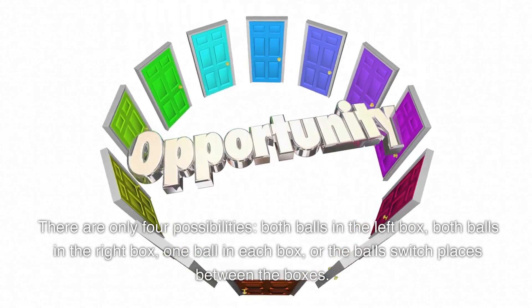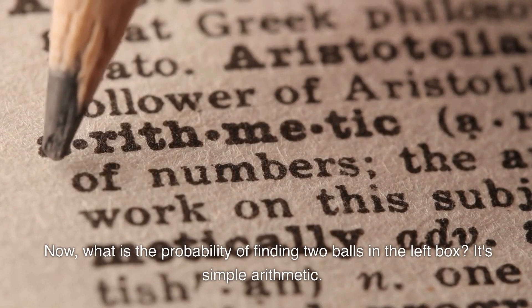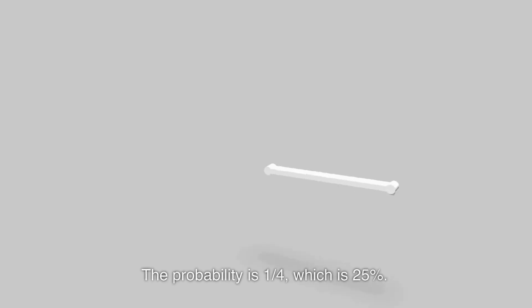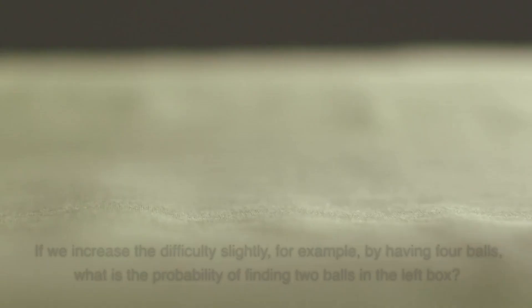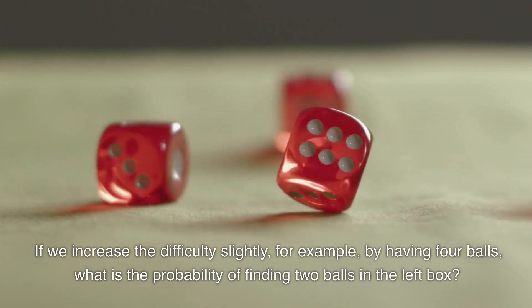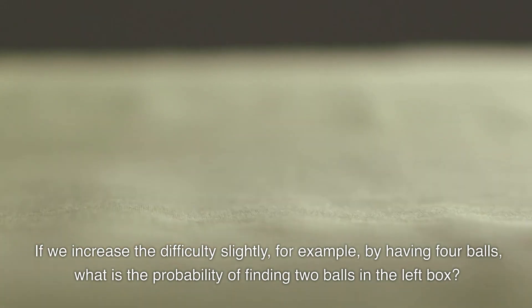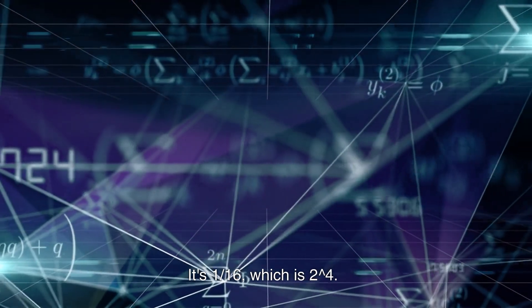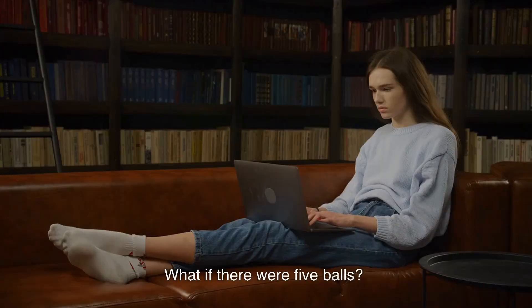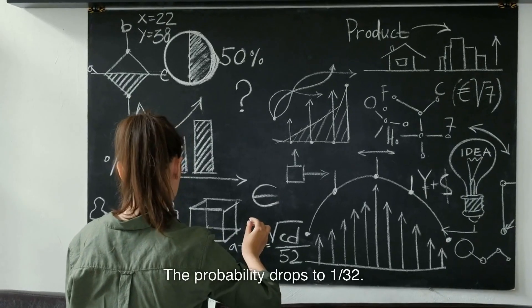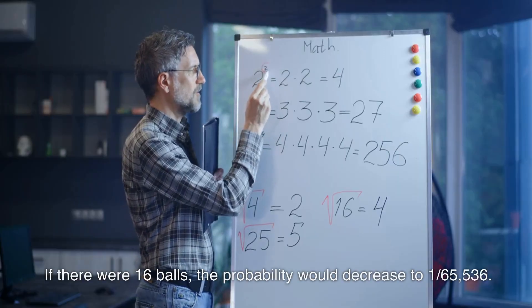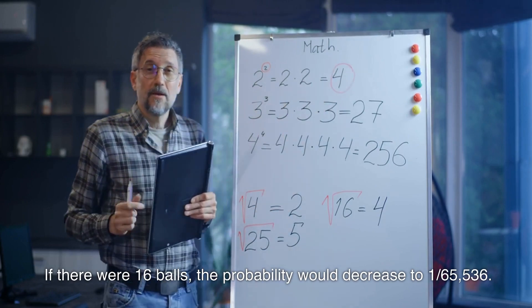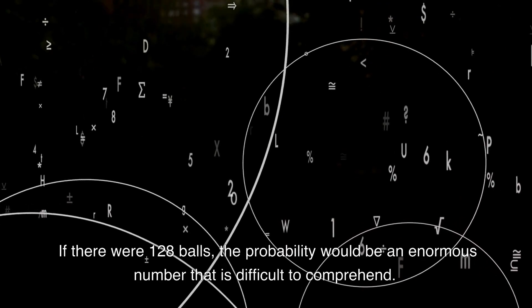Now, what is the probability of finding two balls in the left box? It's simple arithmetic: the probability is 1/4, which is 25%. If we increase the difficulty slightly, for example by having four balls, what is the probability of finding two balls in the left box? It's 1/16, which is 2 to the power of 4. What if there were five balls? The probability drops to 1/32. If there were 16 balls, the probability would decrease to 1/65,536. If there were 128 balls, the probability would be an enormous number that is difficult to comprehend.